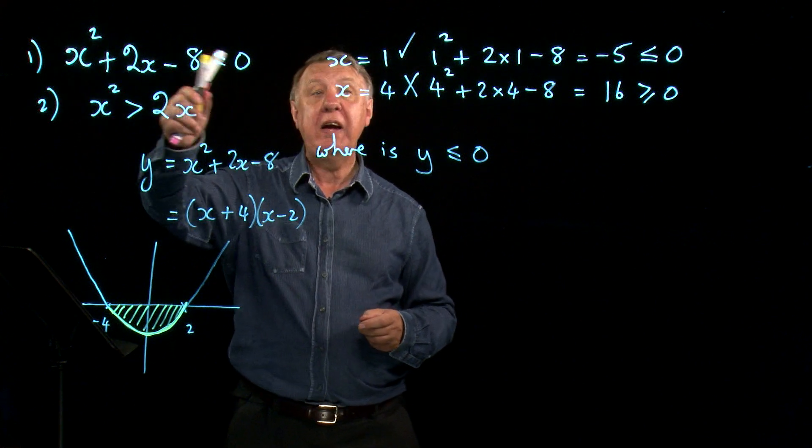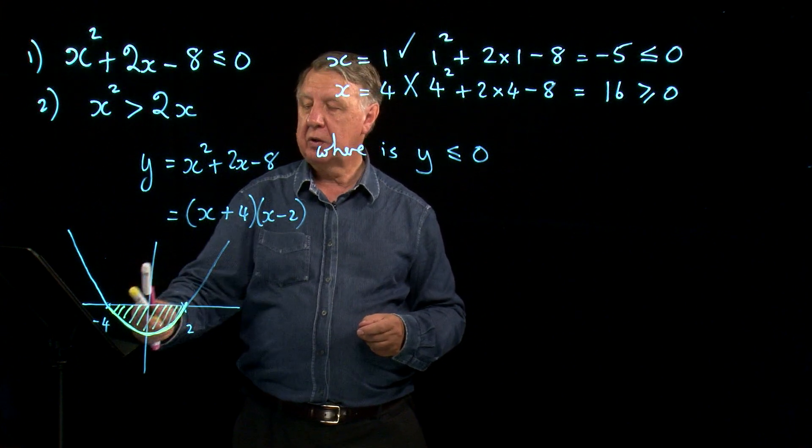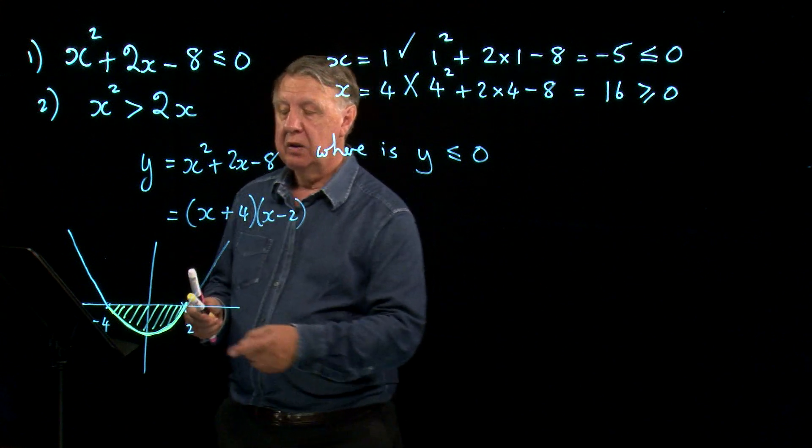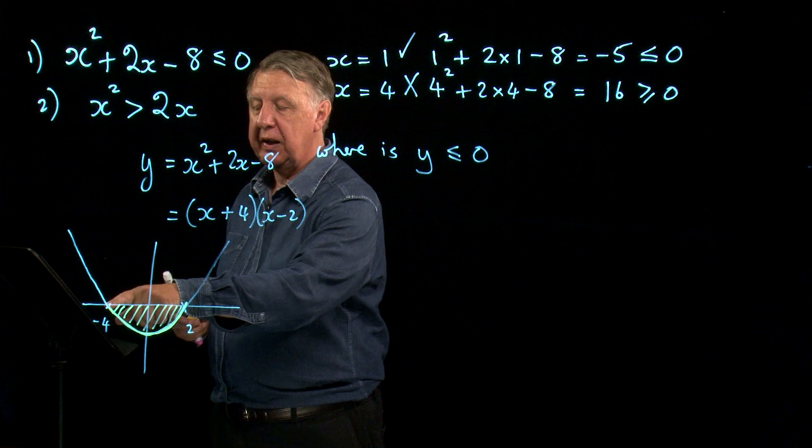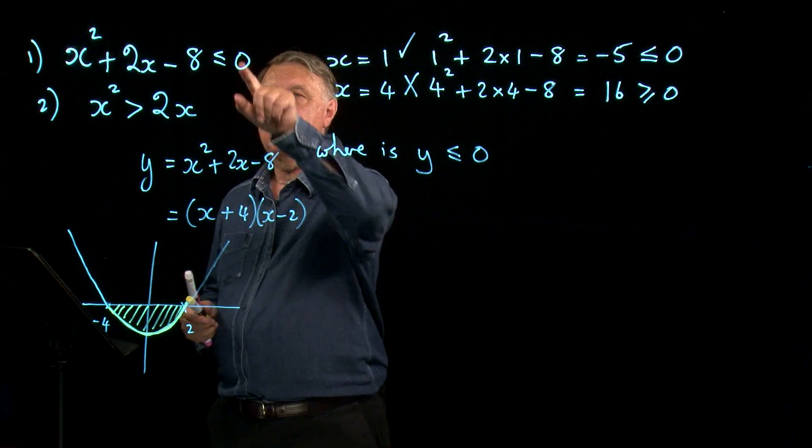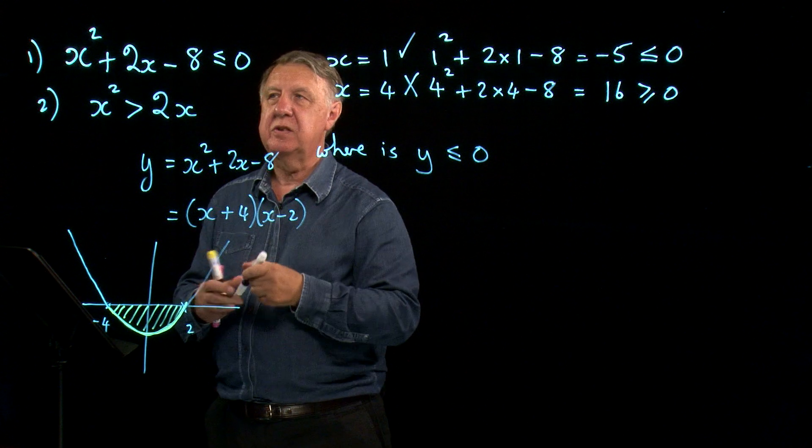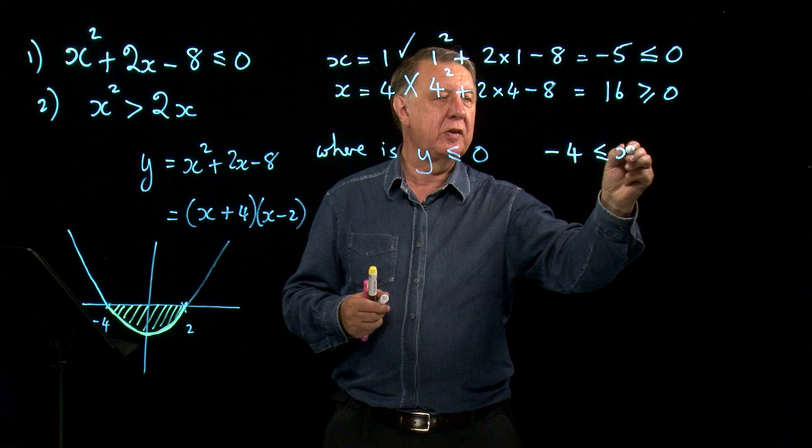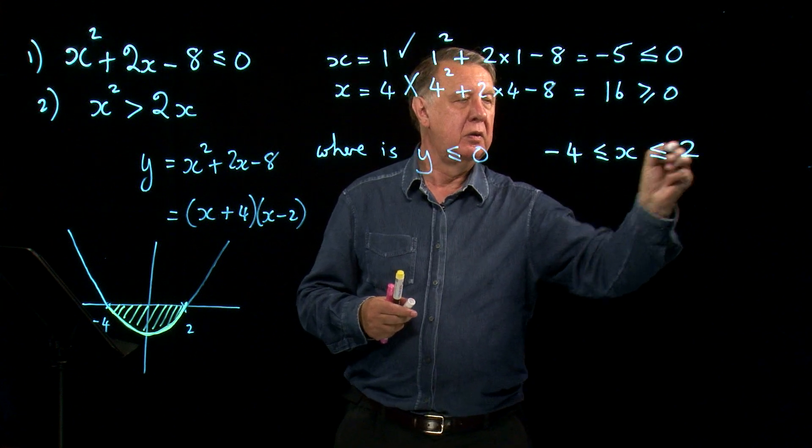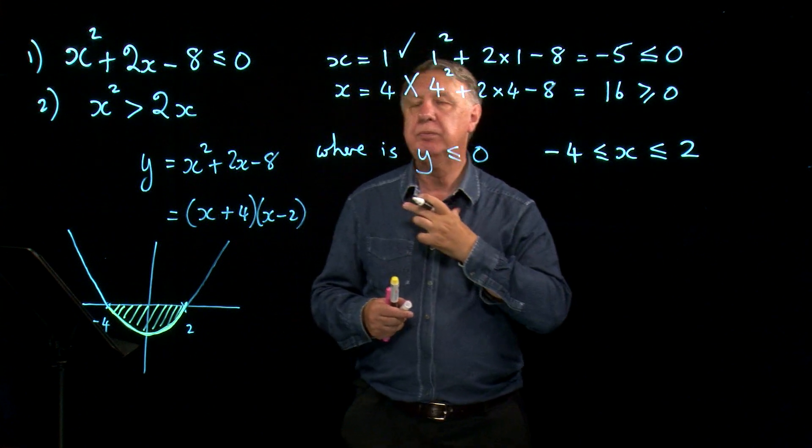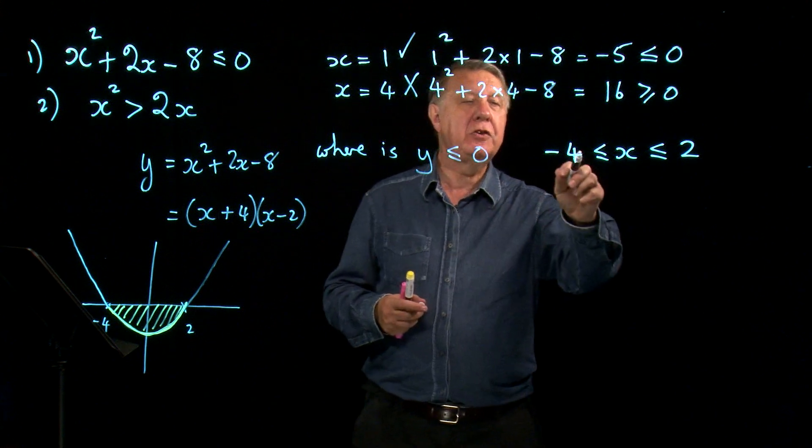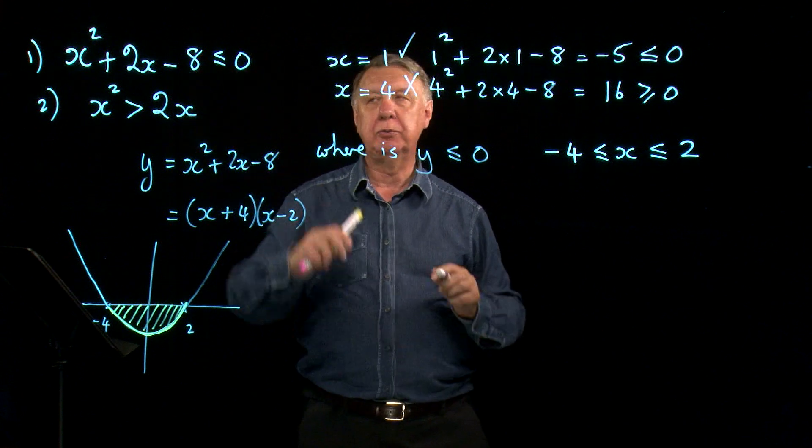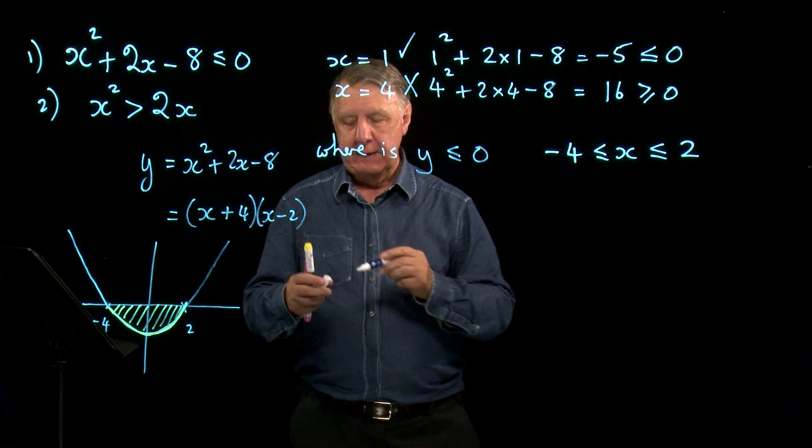But this is about x, not about y. So in this yellow part, what do we know about x? We know that it runs from negative 4 to 2. So the solution to that first equation is negative 4, less than or equal to x, less than or equal to 2. I get a range of values of x as the solution.